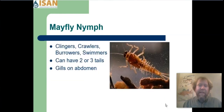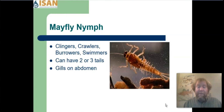Let's talk about mayflies for a few minutes. When identifying a mayfly, the first thing I look at is how many tails it has. Mayflies can have two or three tails. The mayfly in this picture has three tails. One thing that mayflies always have are gills on their abdomen, and if you look at this picture, you can see the gills protruding out from the abdomen of this mayfly.